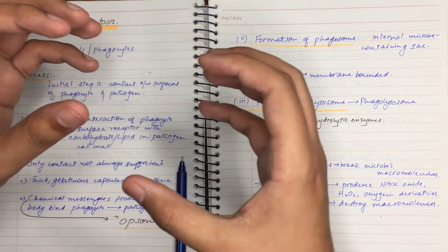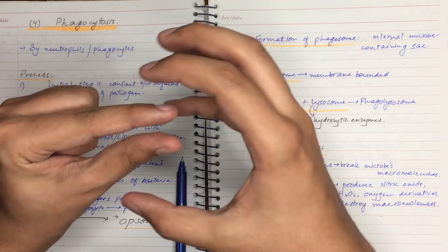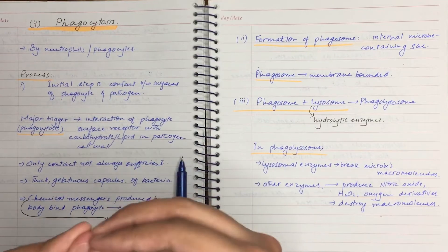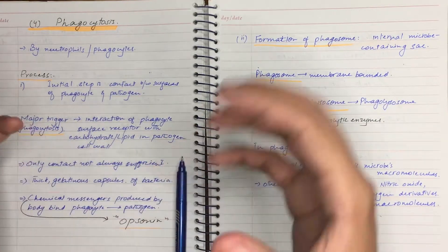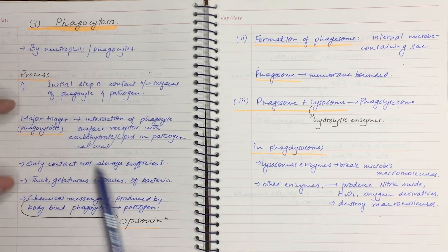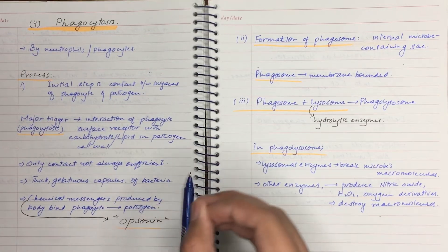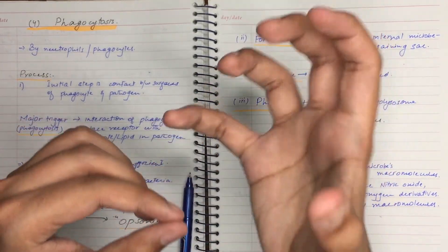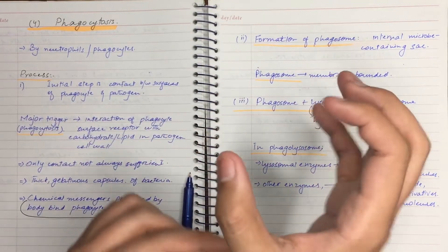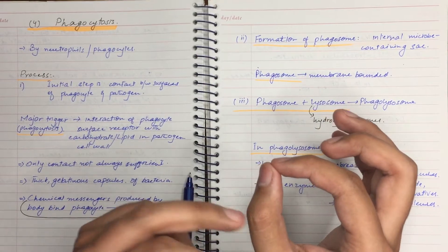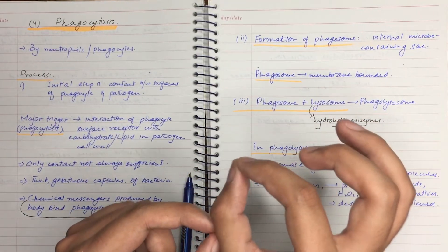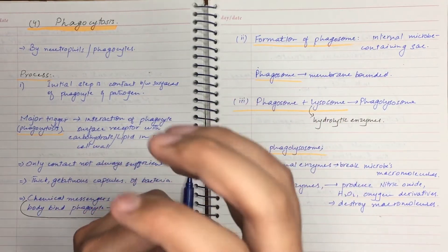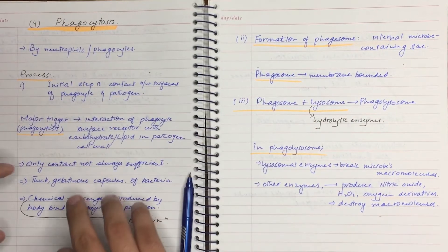The interstitium is present around neutrophils. When contact is not made with bacteria, the pathogen will not be engulfed; only when contact is established will engulfment occur. The major trigger for phagocytosis is the interaction of phagocyte surface receptors with carbohydrate lipids in pathogen cell walls. The receptors on the phagocyte cell membrane bind to the carbohydrates on the pathogen, and after binding, the process of phagocytosis starts and a phagosome forms.